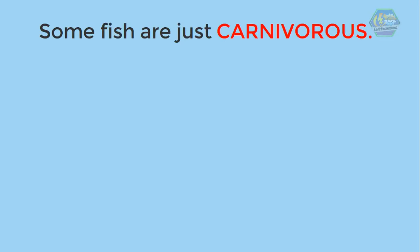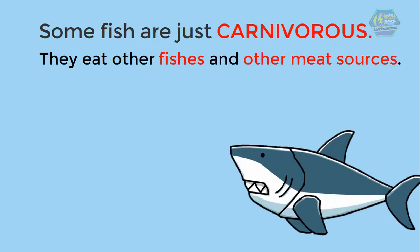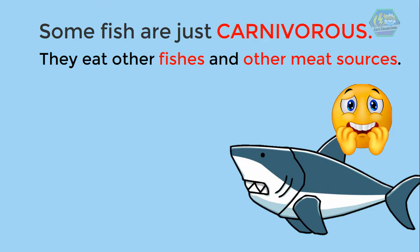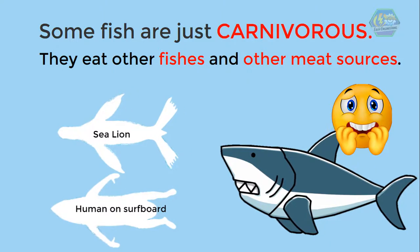Some fish are carnivorous, meaning they eat other fish and meat sources — like sharks. Who's not afraid of sharks? But fear not, because sharks are not really aggressive towards humans. They only see shadows from above and think we are seals, which is why sometimes they try to attack.